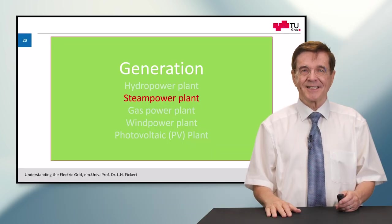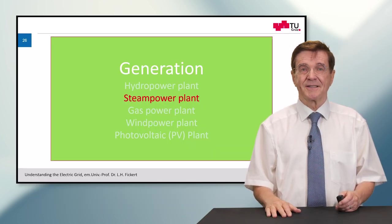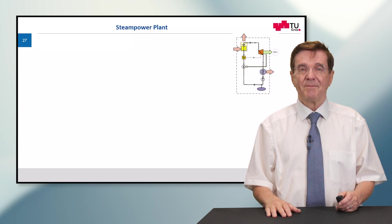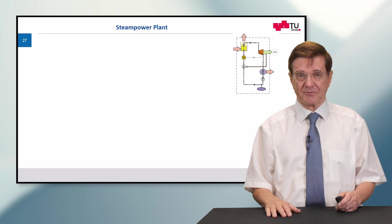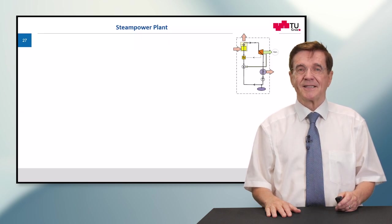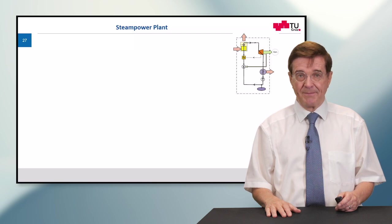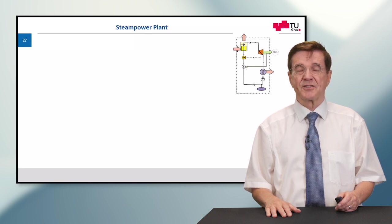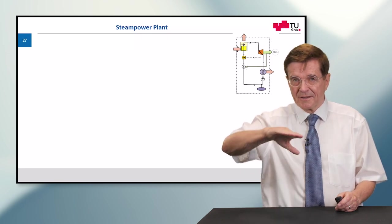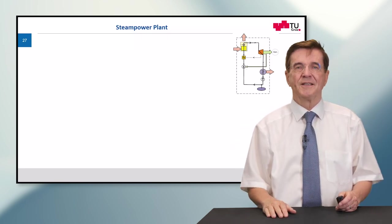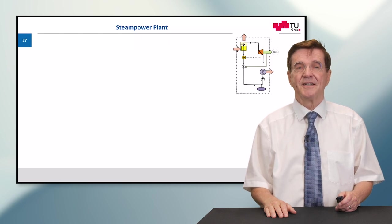So the next type of power plant I want to show you is the steam power plant. Maybe you can remember from one of my previous courses about electrical power generation. A steam power plant works by heating water in a boiler making steam off of it, putting this to the turbine which turns the generator and then it is brought back into the form of water in the condenser. And now I show you these single steps.